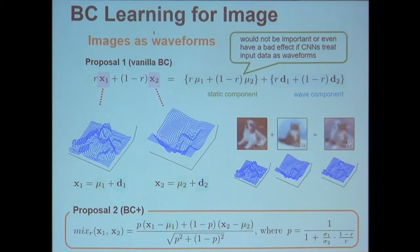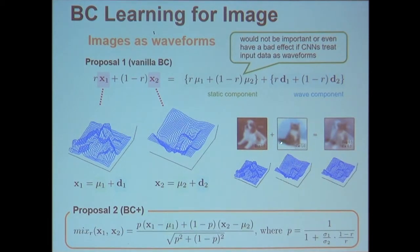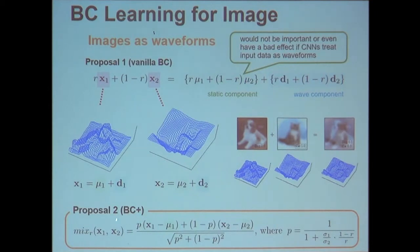Another application of between-class learning is image recognition. However, mixing images is not intuitive — a mixture of 0.5 dog and 0.5 cat is hard to understand. But if we consider images as two-dimensional waveforms, we can handle them just like sound recognition using between-class learning. This improvement is called the BC+ method, which uses only the wavelet components of the image to mix two images from different classes.